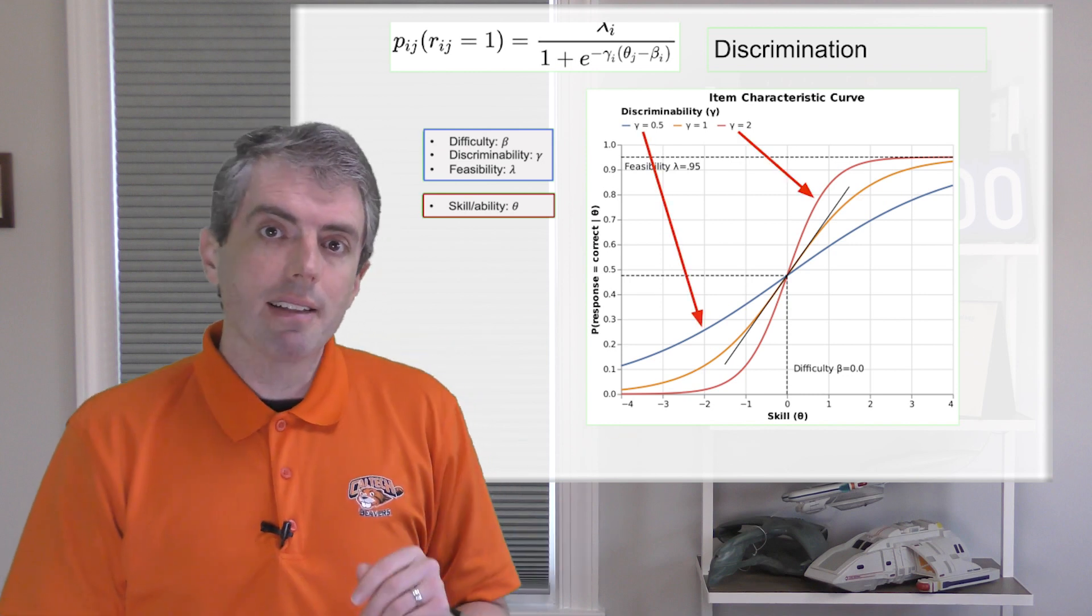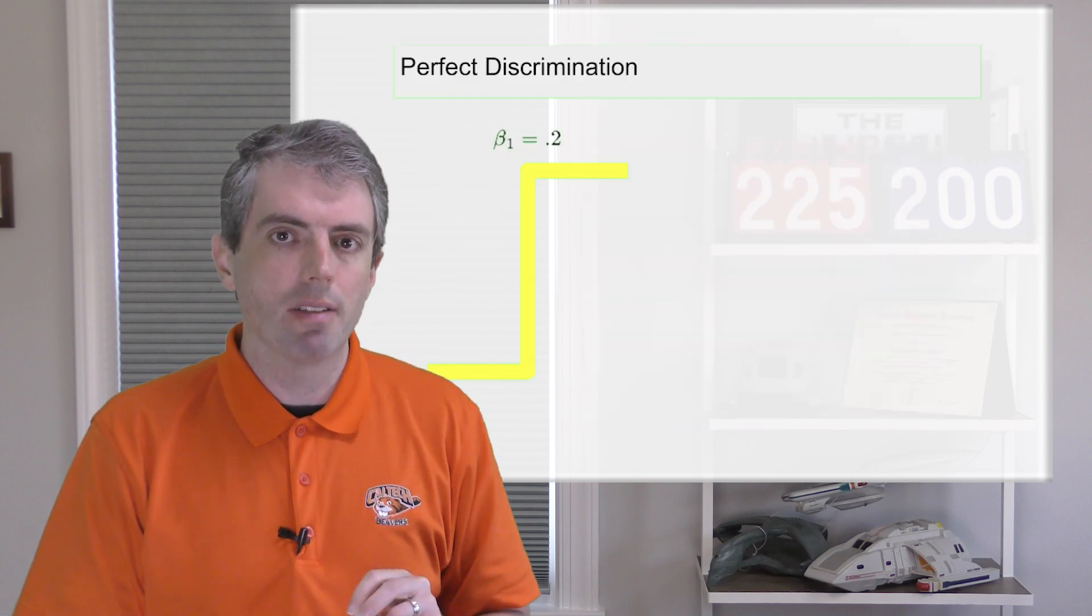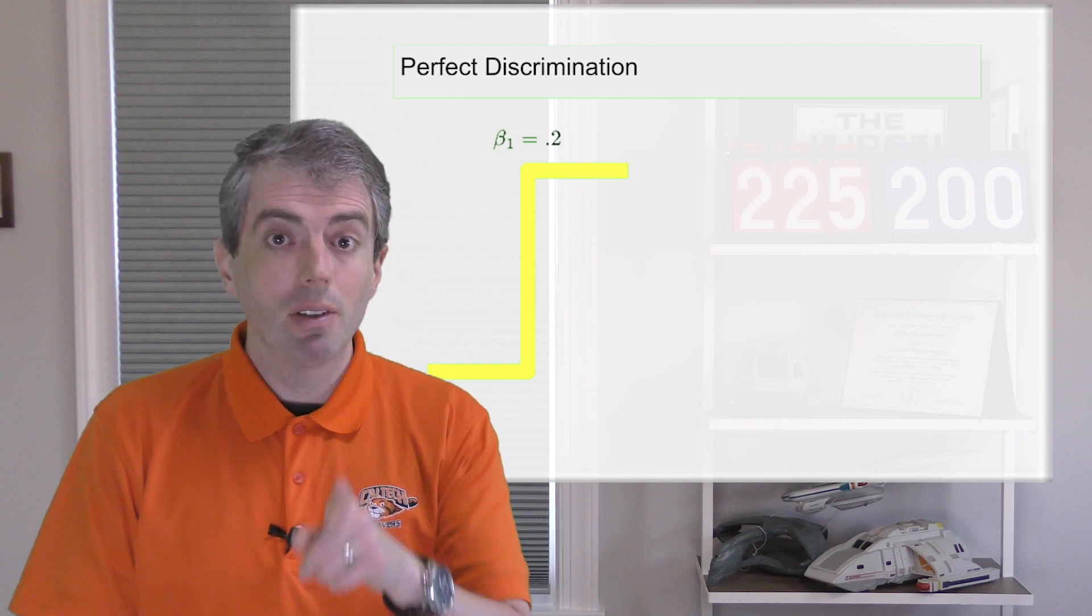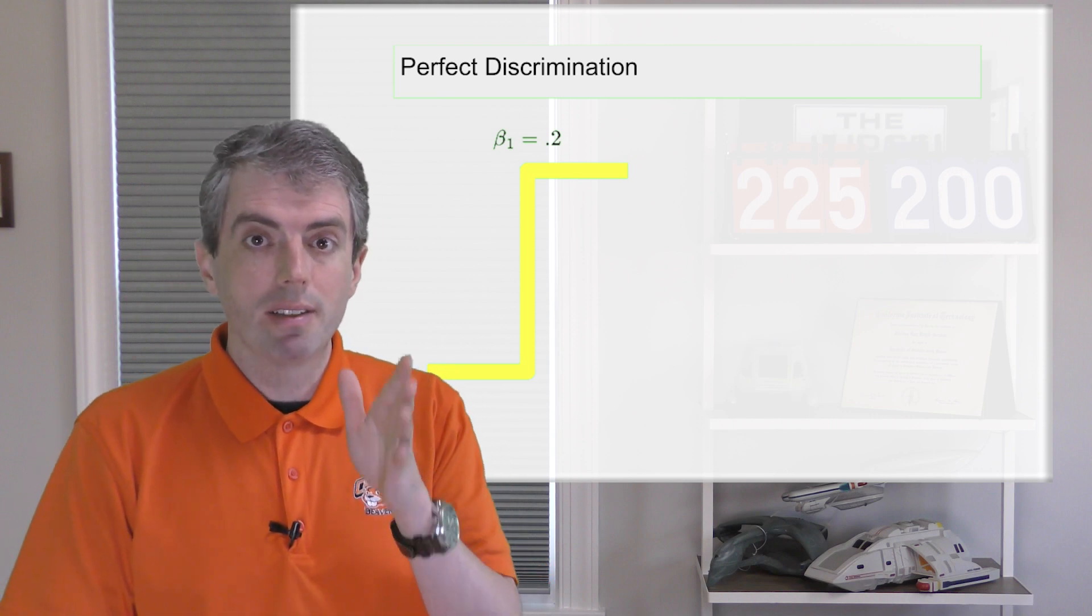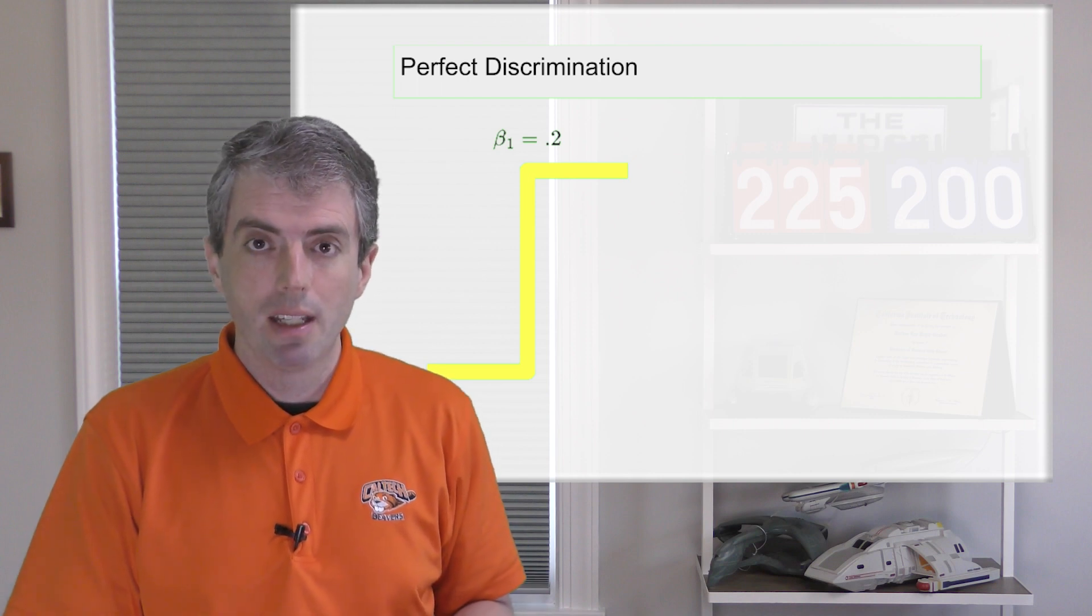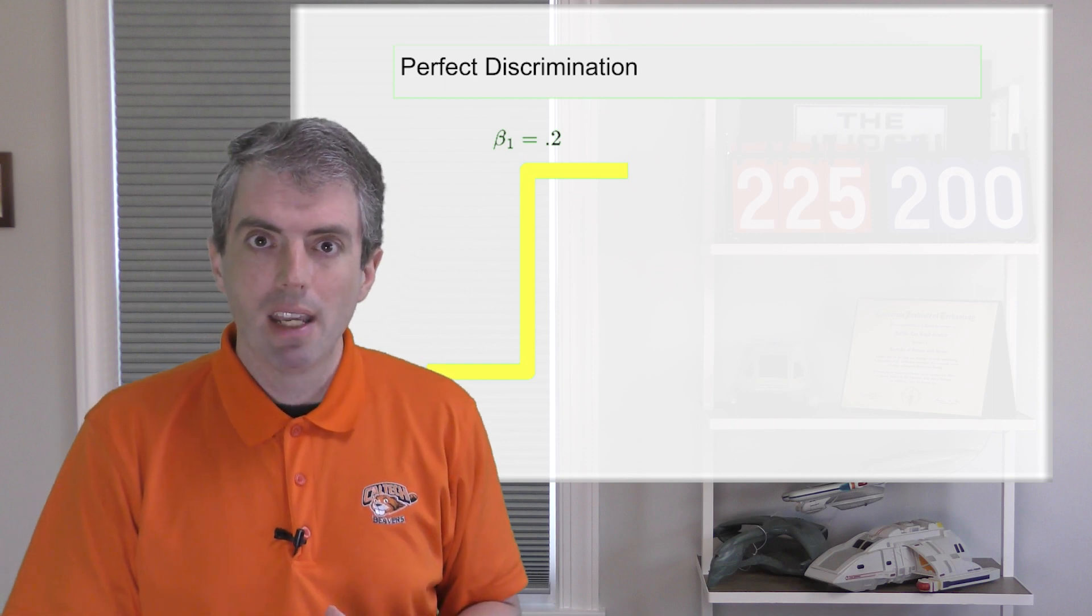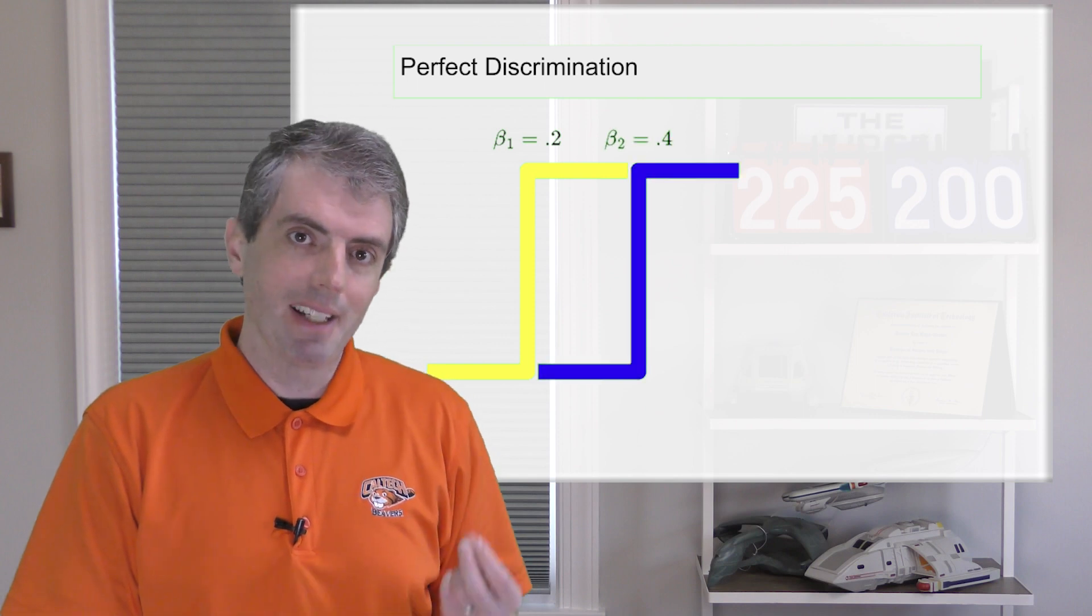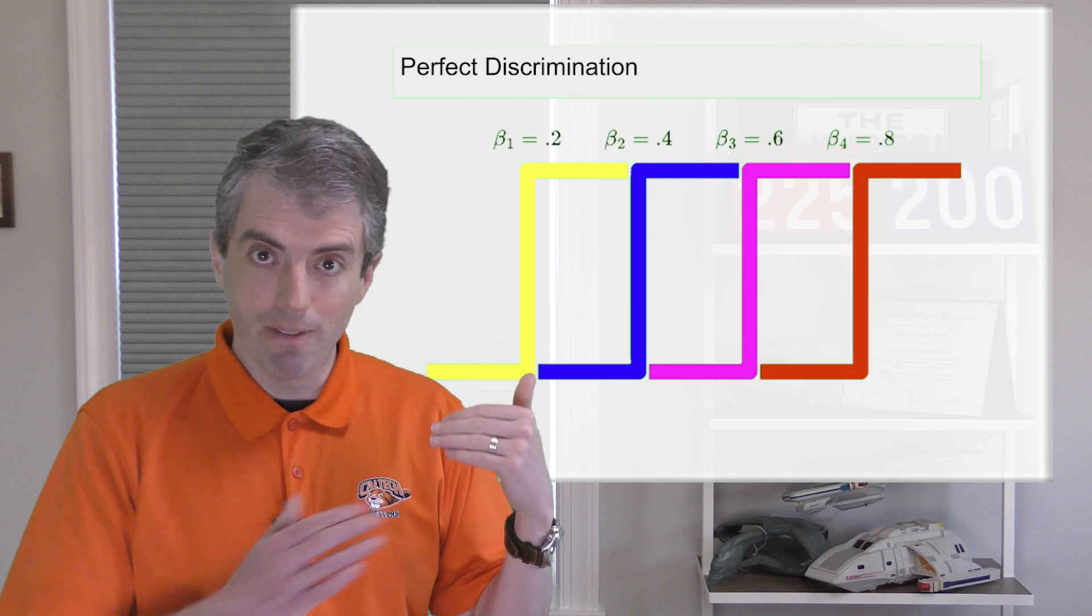This would never happen in practice, but let's imagine you could create a test where every question had perfect discrimination. Then the response curve wouldn't be a curve anymore, it would be a step function like this. So let's say you have a question with difficulty 0.2 and perfect discrimination. Anybody with skill greater than 0.2 will get this right 100% of the time. The second their skill falls below 0.2, they'll get it wrong. But if you do it once, then you could do it again. Let's create several perfect discriminators with a nice grid of different thresholds.